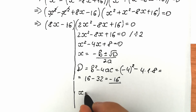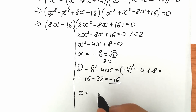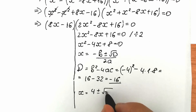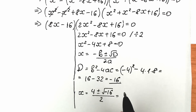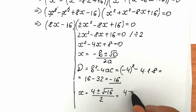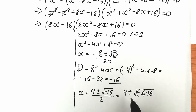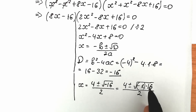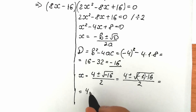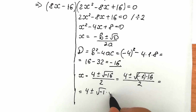Let's plug everything into the formula. We have x equals minus b, which is 4, plus or minus square root of the discriminant — square root of minus 16 — all over 2a, which is 2. We can simplify the square root of minus 16 by writing it as square root of minus 1 times 16, and splitting it into two square roots: square root of minus 1 times square root of 16, all over 2.